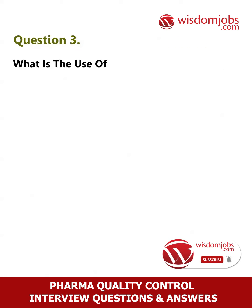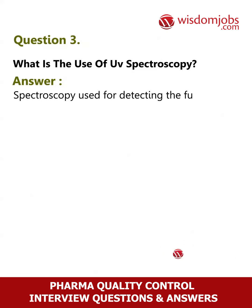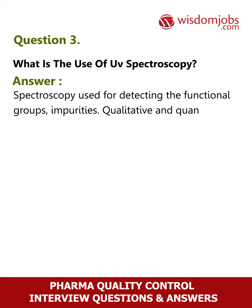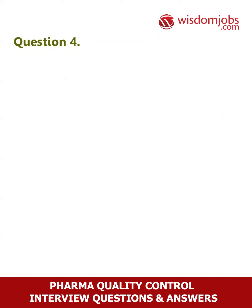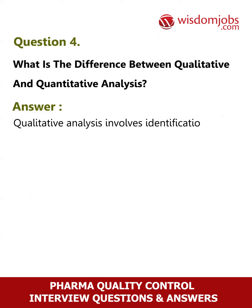Question 3: What is the use of UV spectroscopy? Answer: UV spectroscopy is used for detecting functional groups and impurities. Qualitative and quantitative analysis can be done.